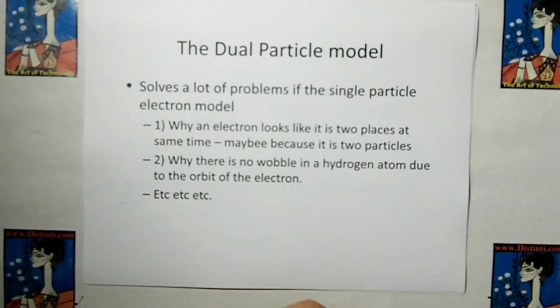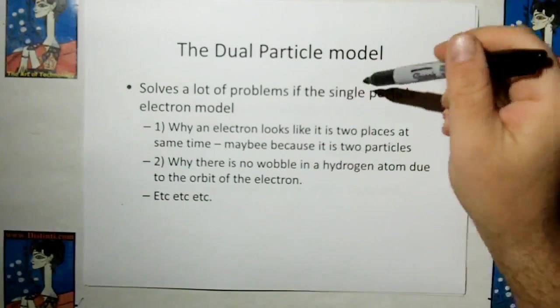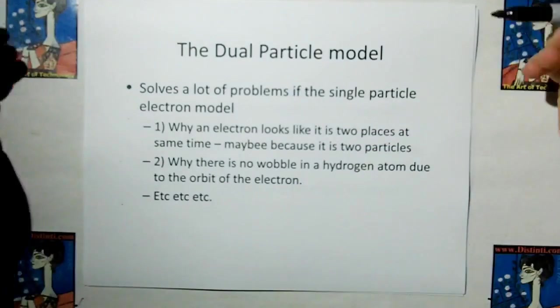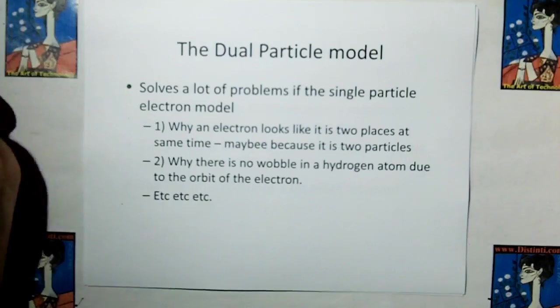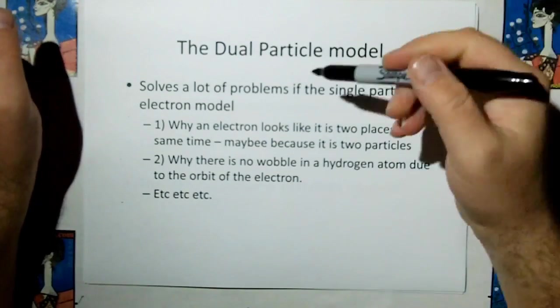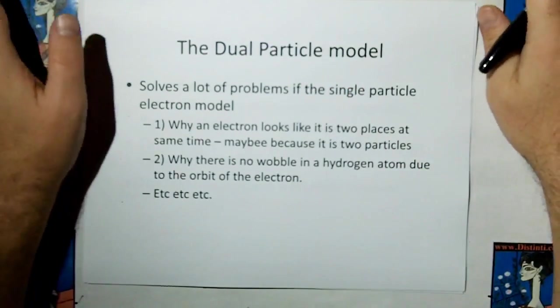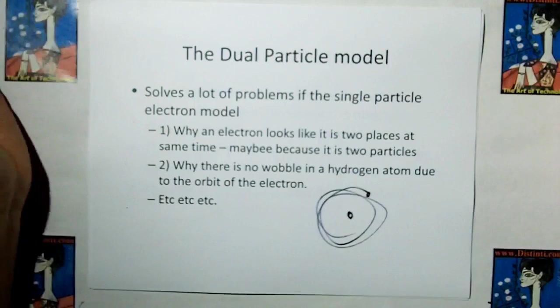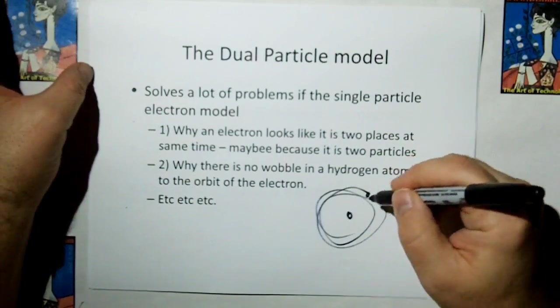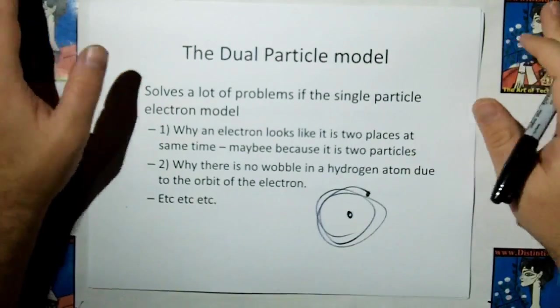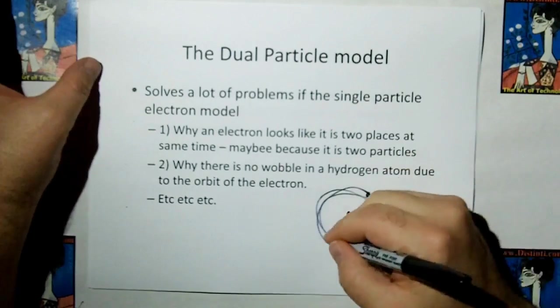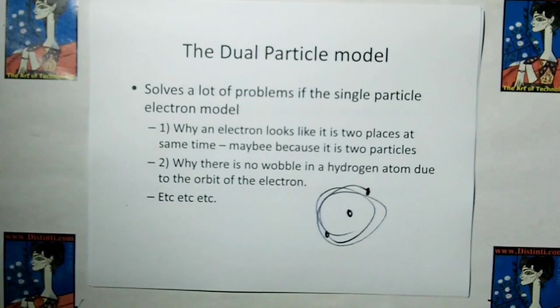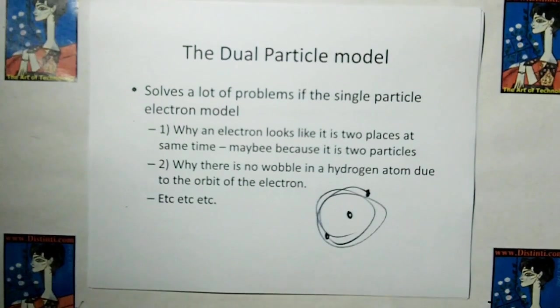So I've gotten tired of trying to weed through all of their explanations. And also the dual particle model has other benefits. It also solves a lot of problems that the single particle model doesn't solve. That explains why an electron looks like it's in two places at the same time. Duh! Maybe because it's two particles. Why there is no wobble in the hydrogen atom due to the orbital atom? If you've got two objects orbiting the center, then there's going to be a balance and there's going to be no wobble.